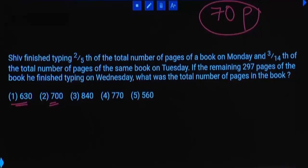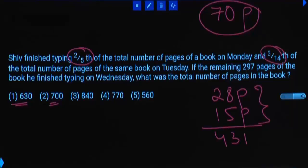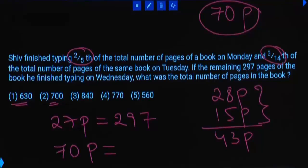Out of 70 parts, on first day, typing was done for 2/5 of pages. What is 1/5? 14. 2/5? 28. 28 parts over. Next, second day 3/14. What is 1/14? 5. 3/14? 15. So 15 parts typing is also over. First 2 days, 43 pages of work is done. Remaining? 27. 27 pages, which is equal to 297. 70 parts is equal to how much? 11 times. 70 times 11. 770.